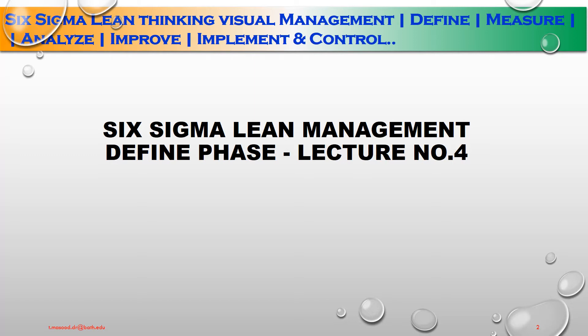Six Sigma Lean Management — define phase, lecture number four. In lecture number one and two, we discussed Six Sigma methods, Six Sigma principles, lean and DMAIC differences, define, measure, analyze, improve and control, and lean history. In lecture number three, we discussed history of Six Sigma, Six Sigma strategy, the difference between conventional and Six Sigma strategy, Six Sigma criticals, problem solving strategy, and voice of customers. Now we are going to run a complete trail on lecture number four.